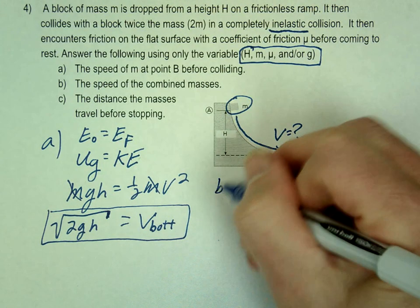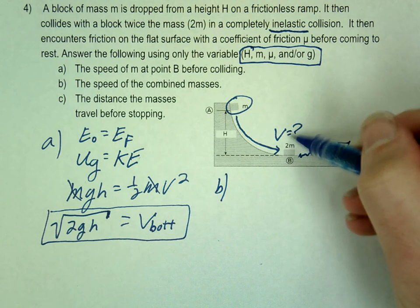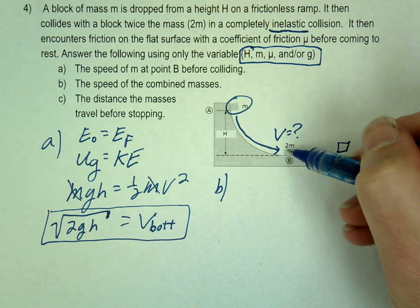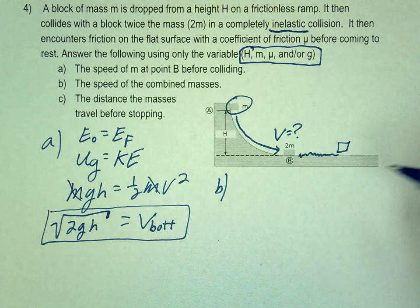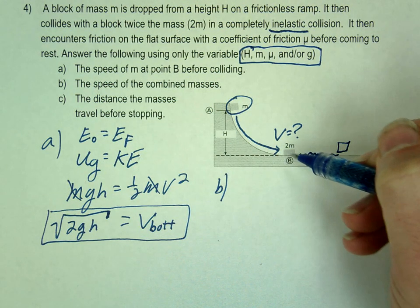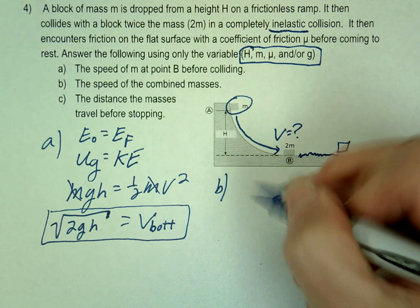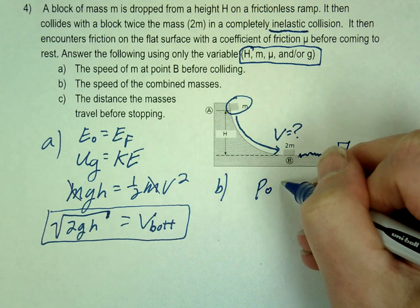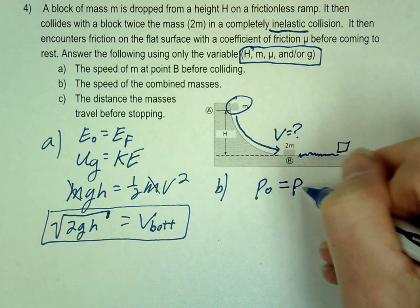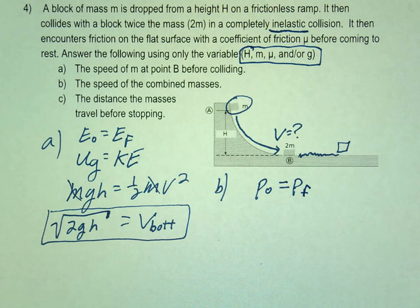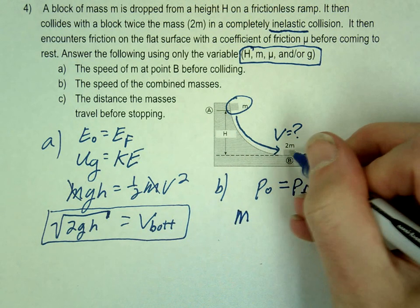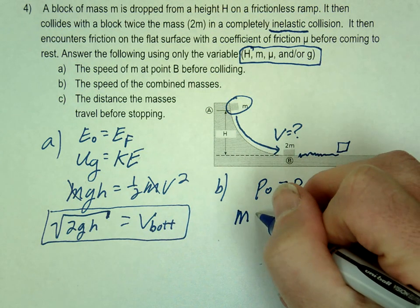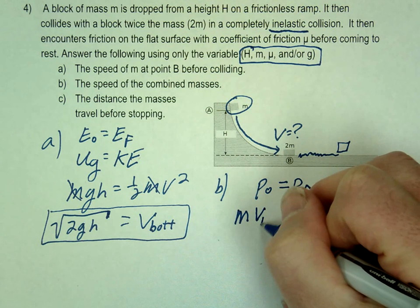Letter B. So now we have this mass moving, it's going to collide with the second mass and stick. So what concept are we going to use to solve this? Momentum conservation. Good, so that's going to be p initial equals p final. So we have the mass, the single mass, and its velocity. Let's call that v bottom. We just found that.